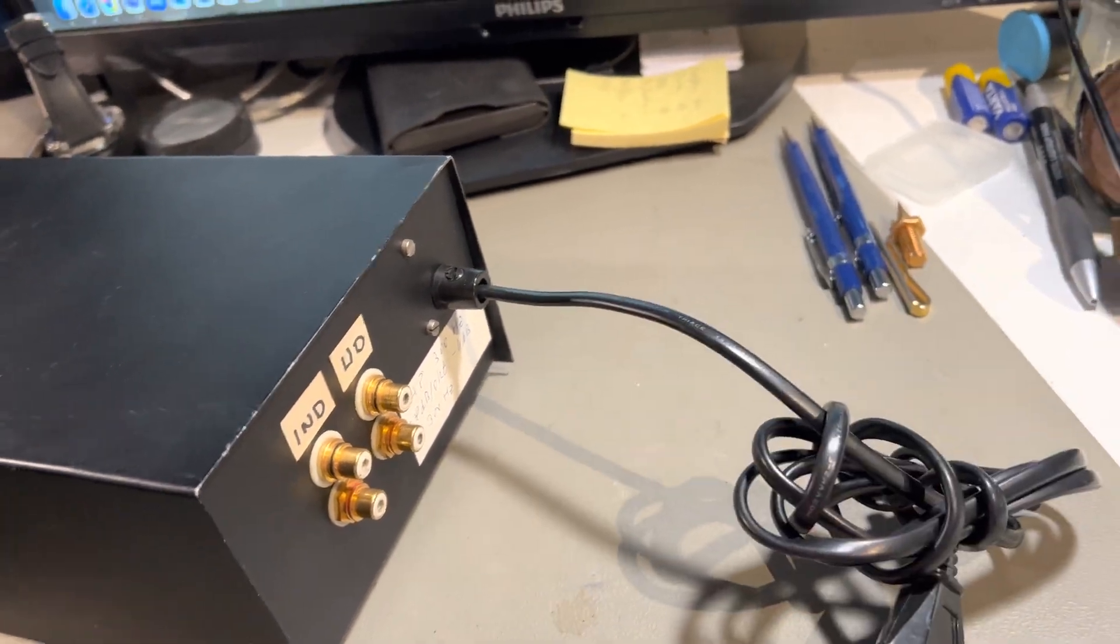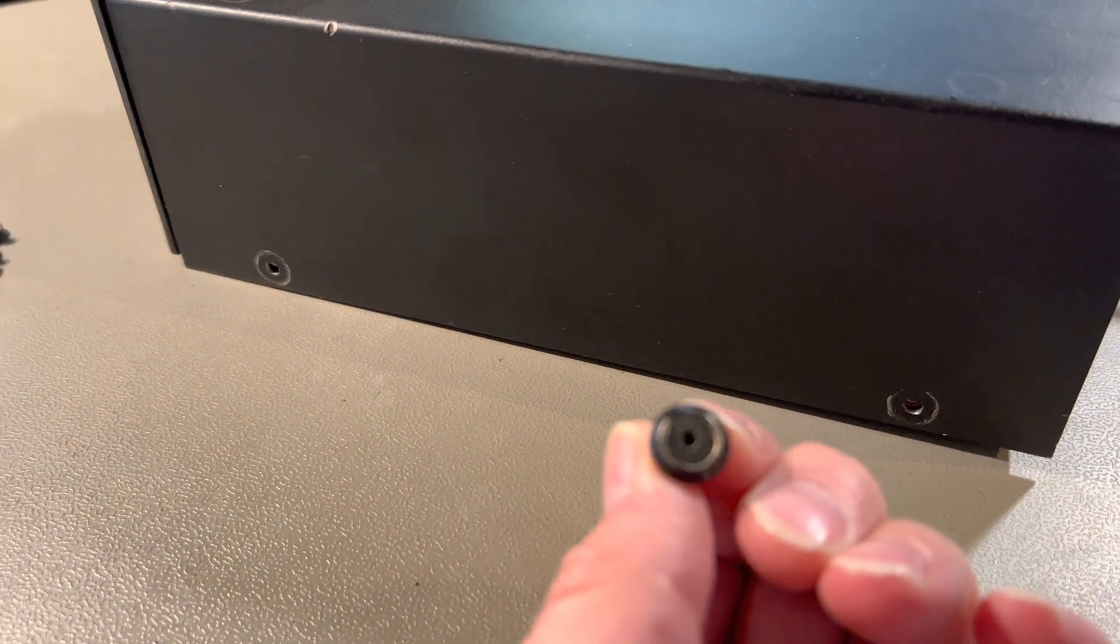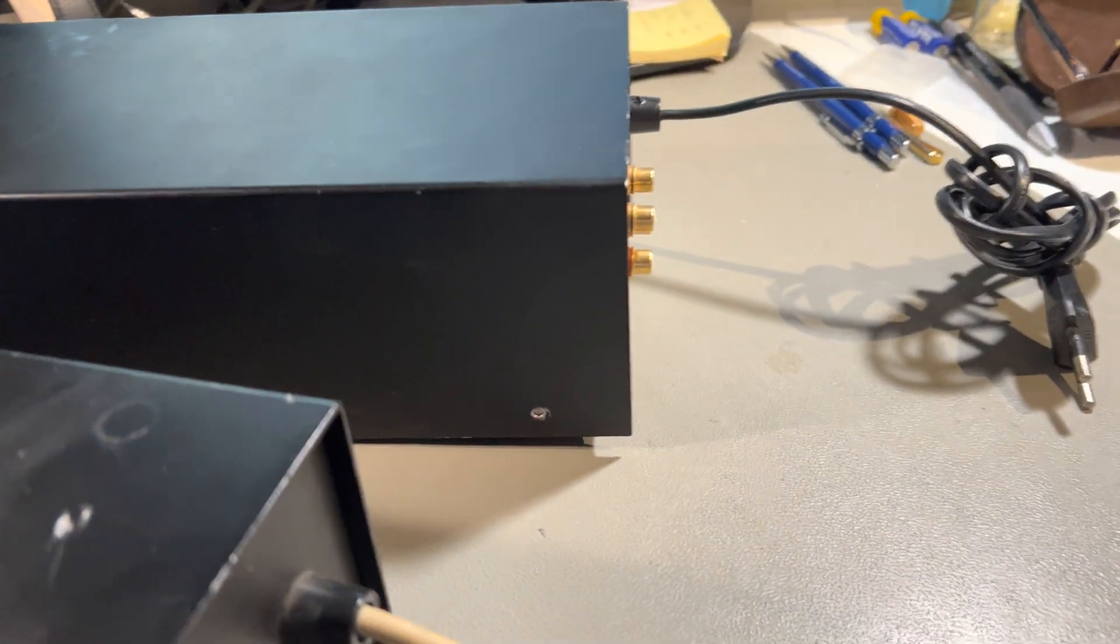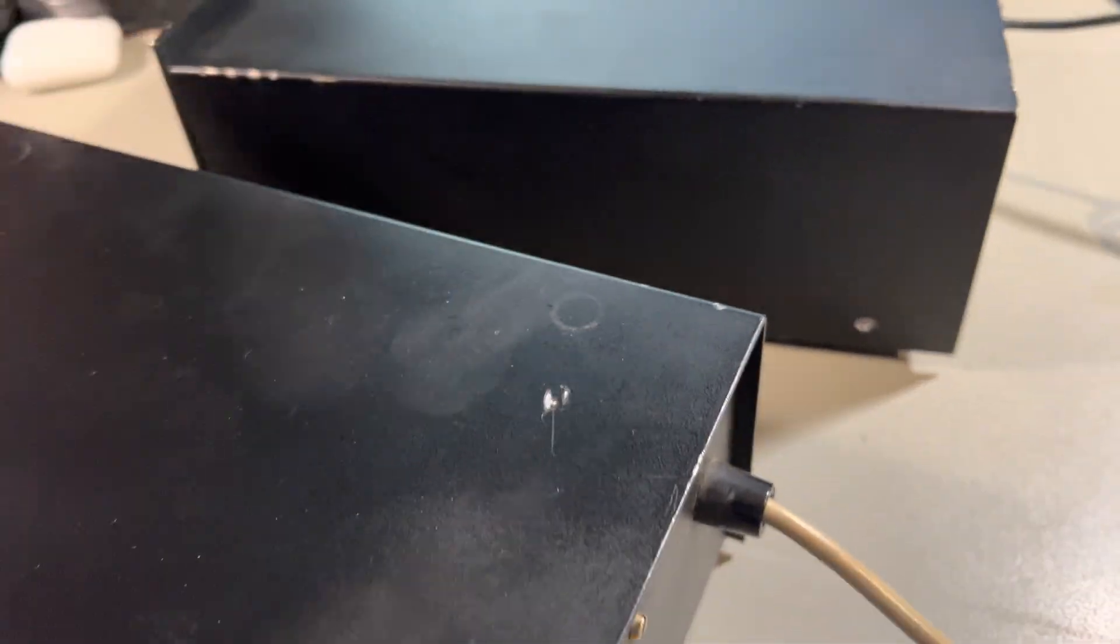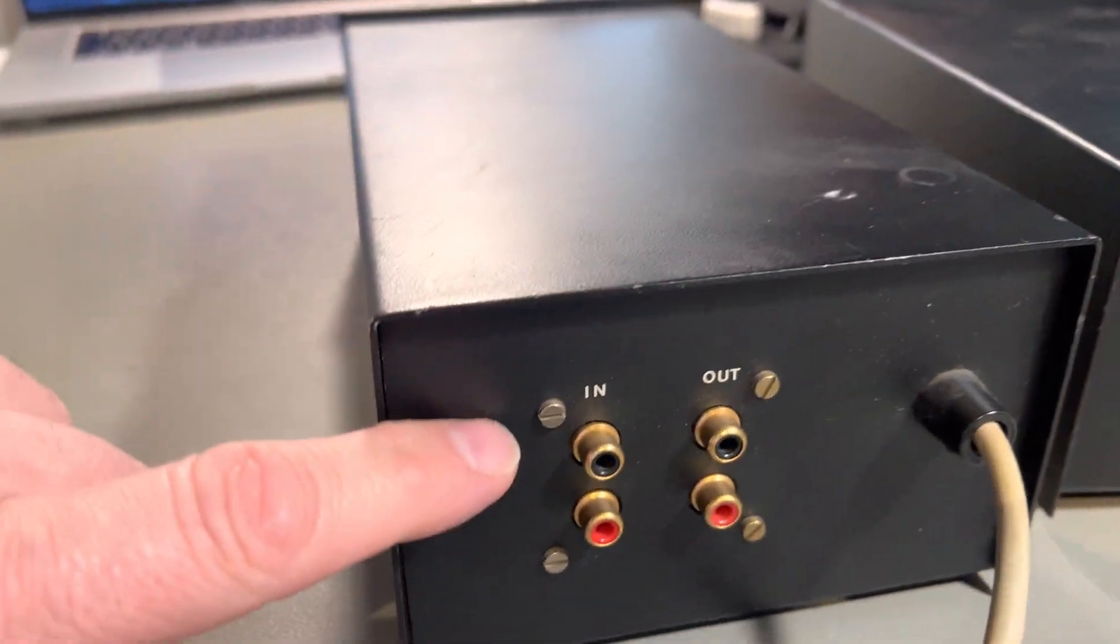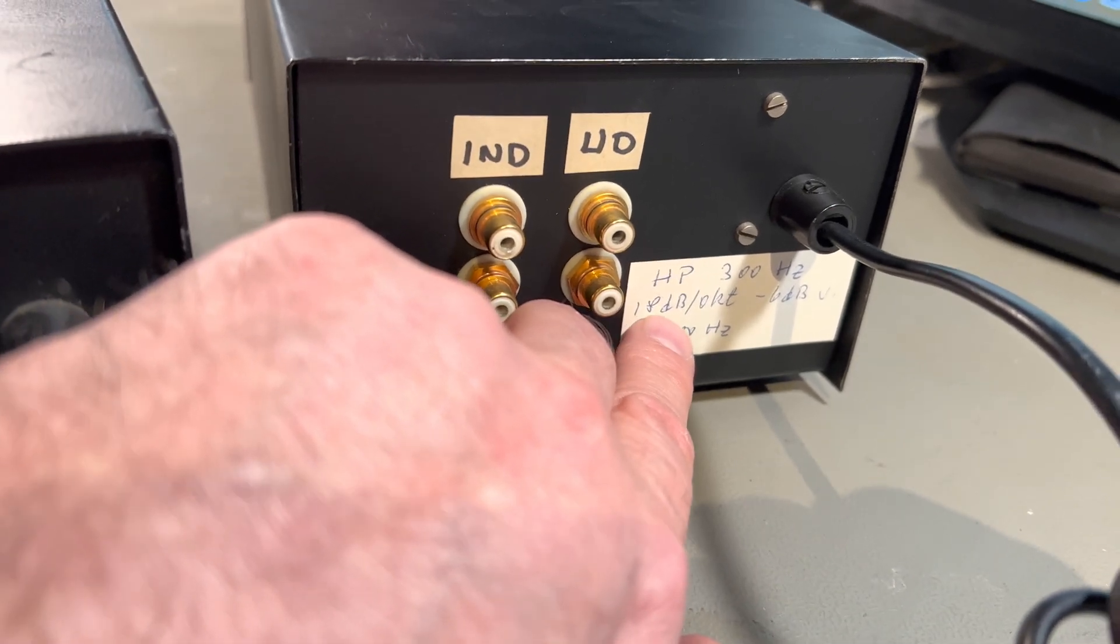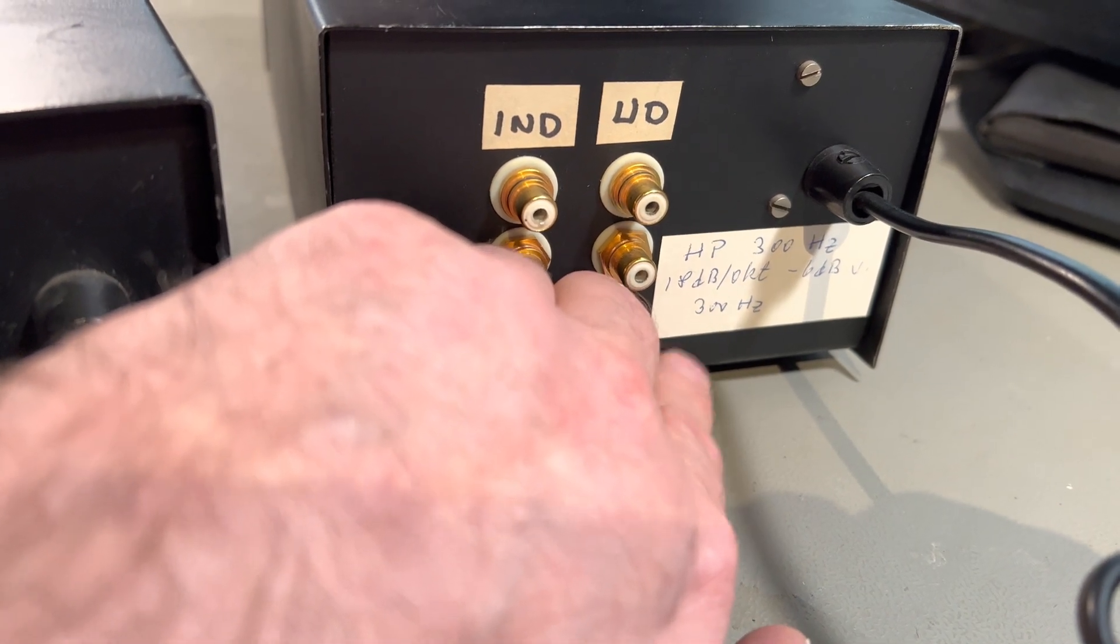This is a relatively new mains cable and the mounting is also a bit different. This one is with a hex diagonal screw and this one was with a self-cutting screw. There's also a reason for that. Looking at the back here you see it's printed 'in' and 'out,' and this one says nothing, but this one: high pass 300 hertz, 18 dB octave minus six. 300 hertz - it's a crossover.